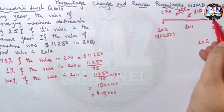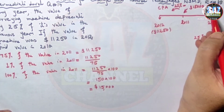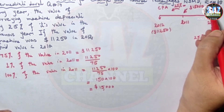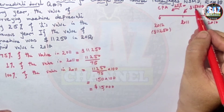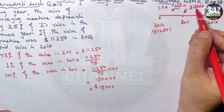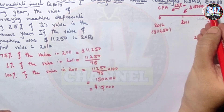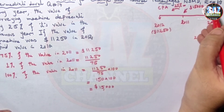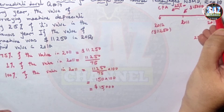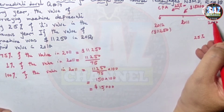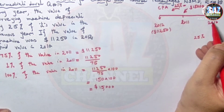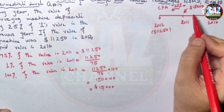Now we need to find the value in 2010. The value in 2011 ($15,000) is 25% less than the value in 2010. So $15,000 represents 75% of the value in 2010.